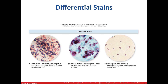Here are the various differential stains. Gram stain shows purple gram-positive bacteria and pink gram-negative bacteria — these differences are due to cell wall differences. Acid-fast positive organisms are pink, and the blue cells are acid-fast negative. This is useful to identify Mycobacterium. The last one shows us endospores, which are green, and the vegetative cells, which are pink. This stain is important in identifying Clostridium and Bacillus.